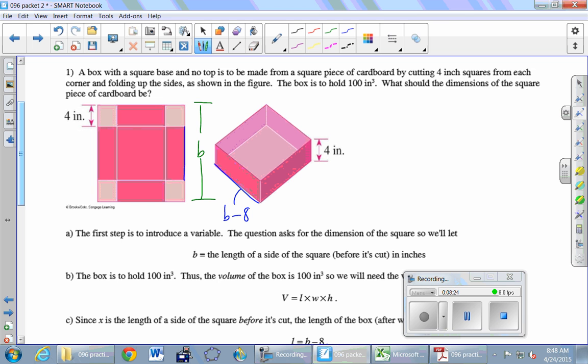Let's call that the length. How about the width? Another B minus 8, right? Because it's a square that we started with. Okay.